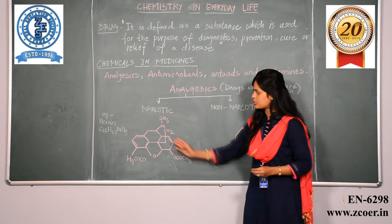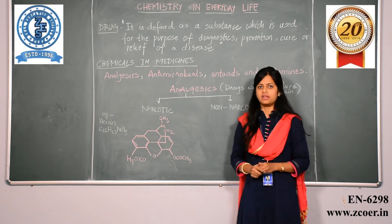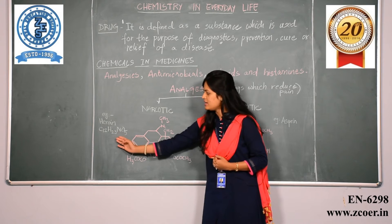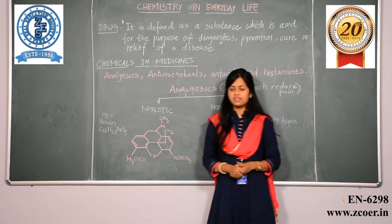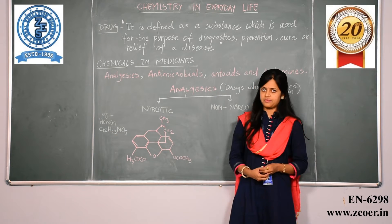Now this is the structure of an example which is heroin. Its chemical structure is C12H23NO5.